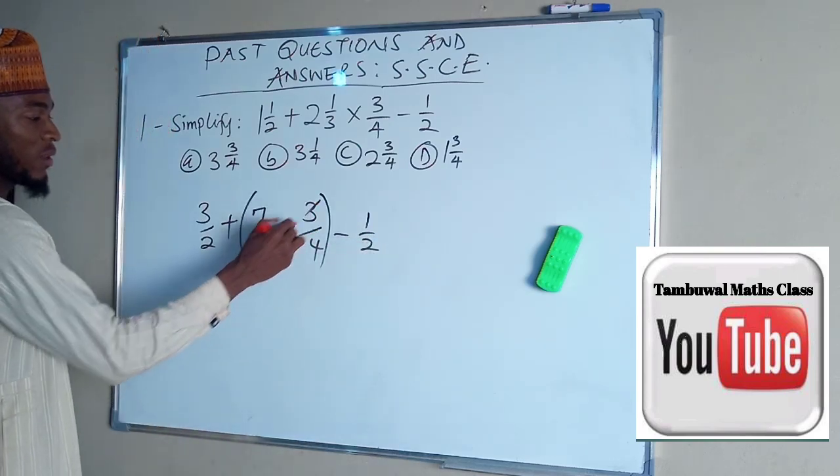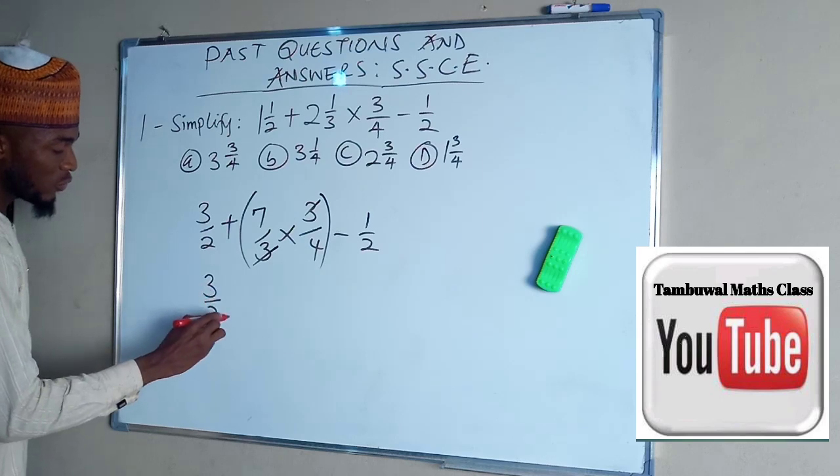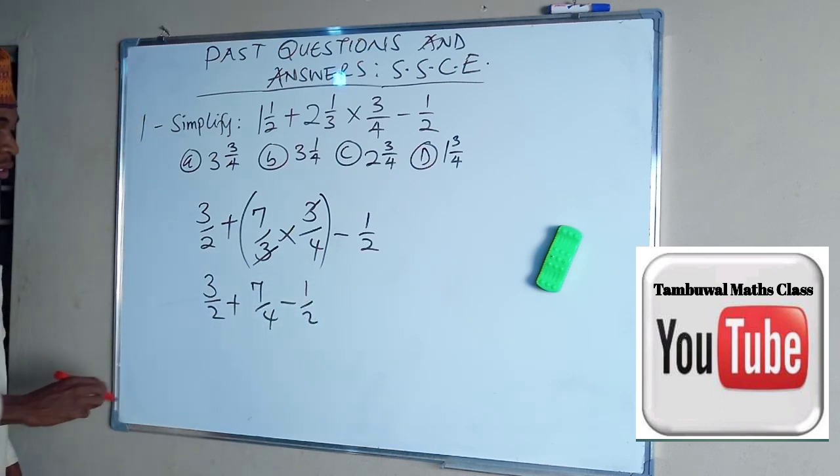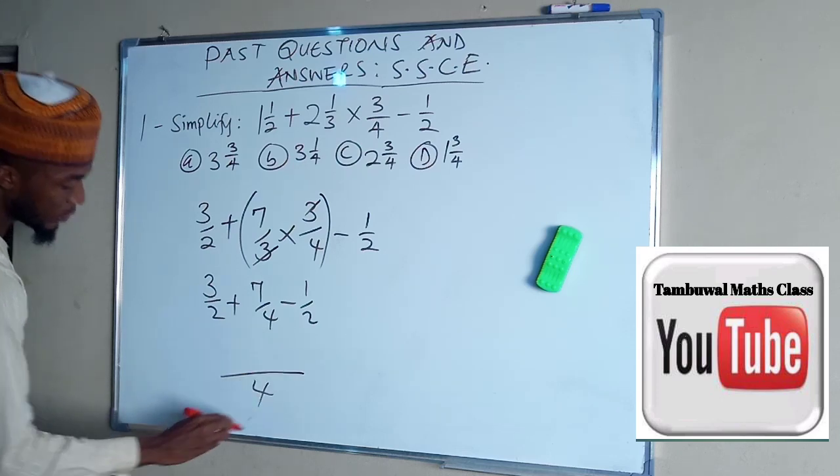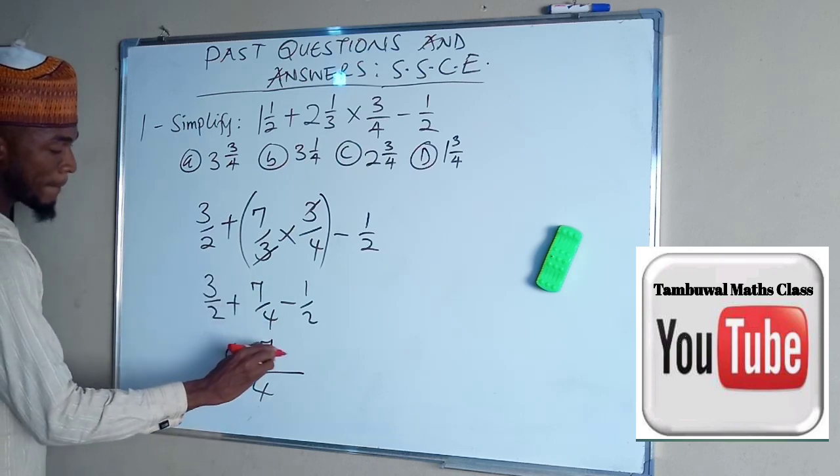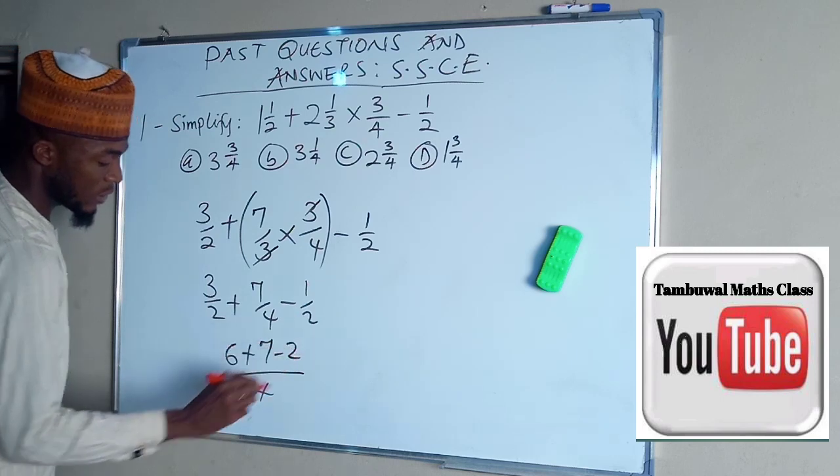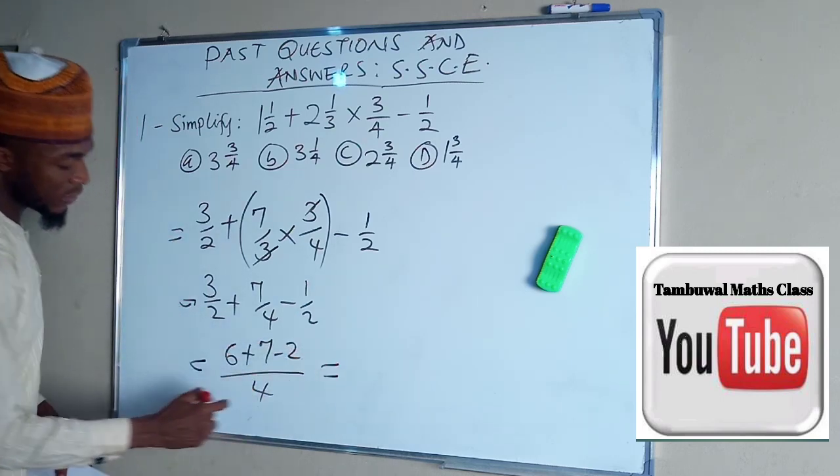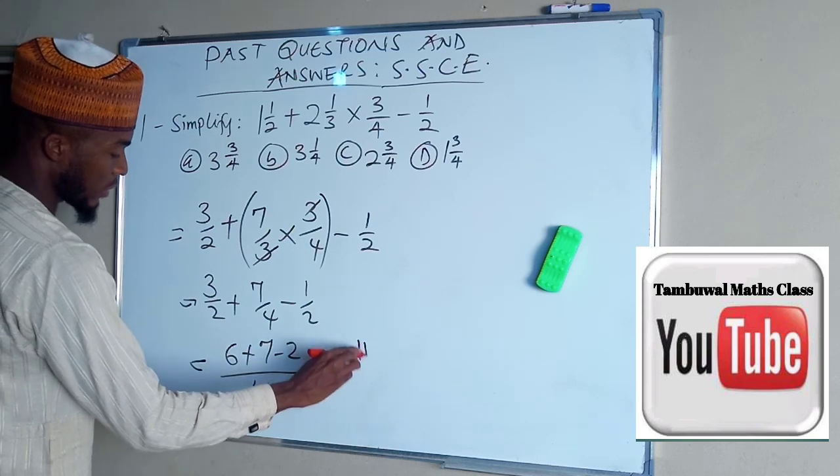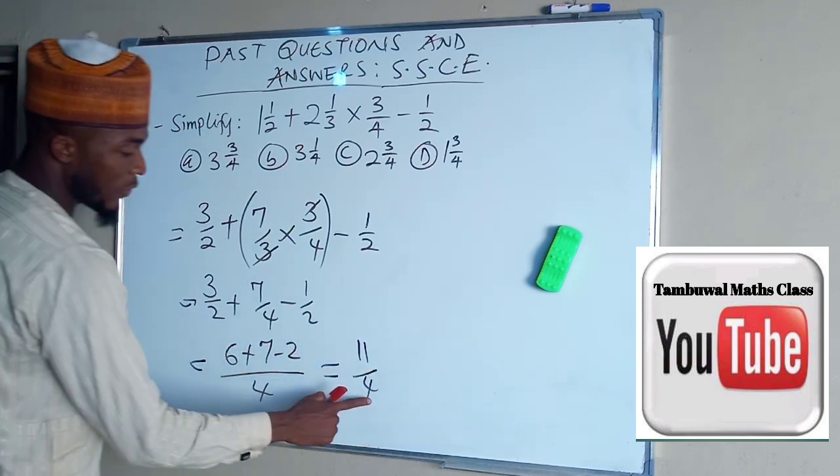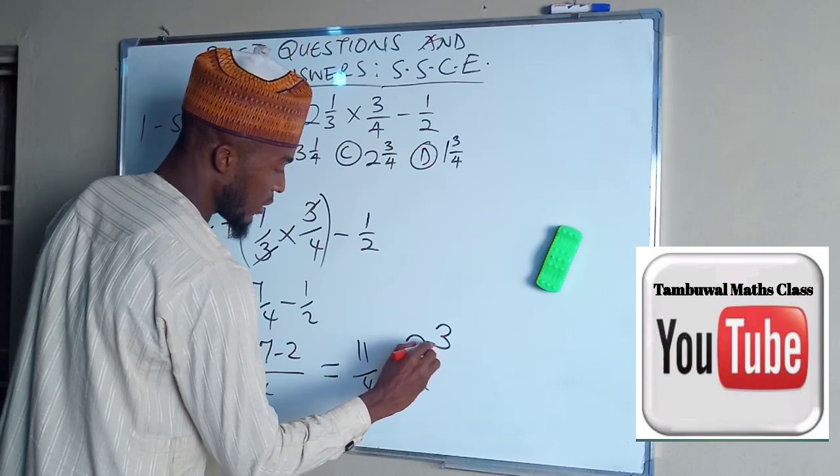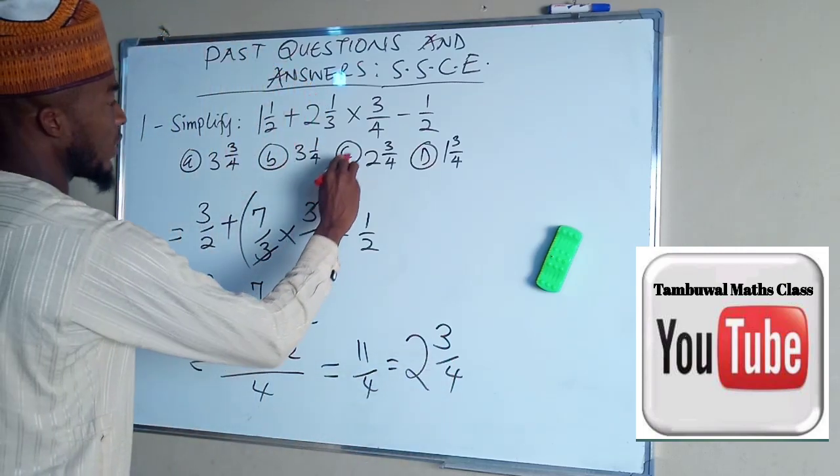We begin with this. For this, cancel this. So we end up having 3 divided by 2 plus 7 over 4 minus 1 over 2. Each one of these has a common LCM which is 4. 2 into 4 is 2 times 3 is 6, plus 4 times this is 7, minus 2 here, 2 times this is 2. So this will give us 6 plus 7 is 13, and 13 minus 2 is 11 divided by 4. And 4 can go into 11, 2 times, remainder 3 divided by 4. So this is the final answer, which is C.